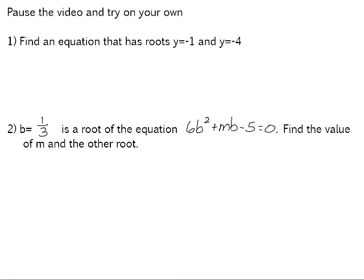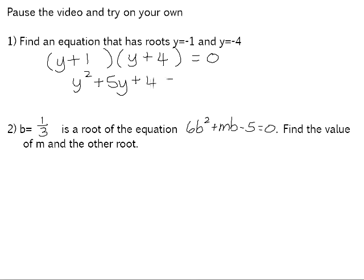Number 1: find an equation that has roots y equals negative 1 and y equals negative 4. We know we had the product of two binomials equal to 0 that gave us those solutions, so we must have had y plus 1 and y plus 4. Multiplying that out gives y squared plus 5y plus 4 equals 0, and that is a possible equation that gives us those roots.